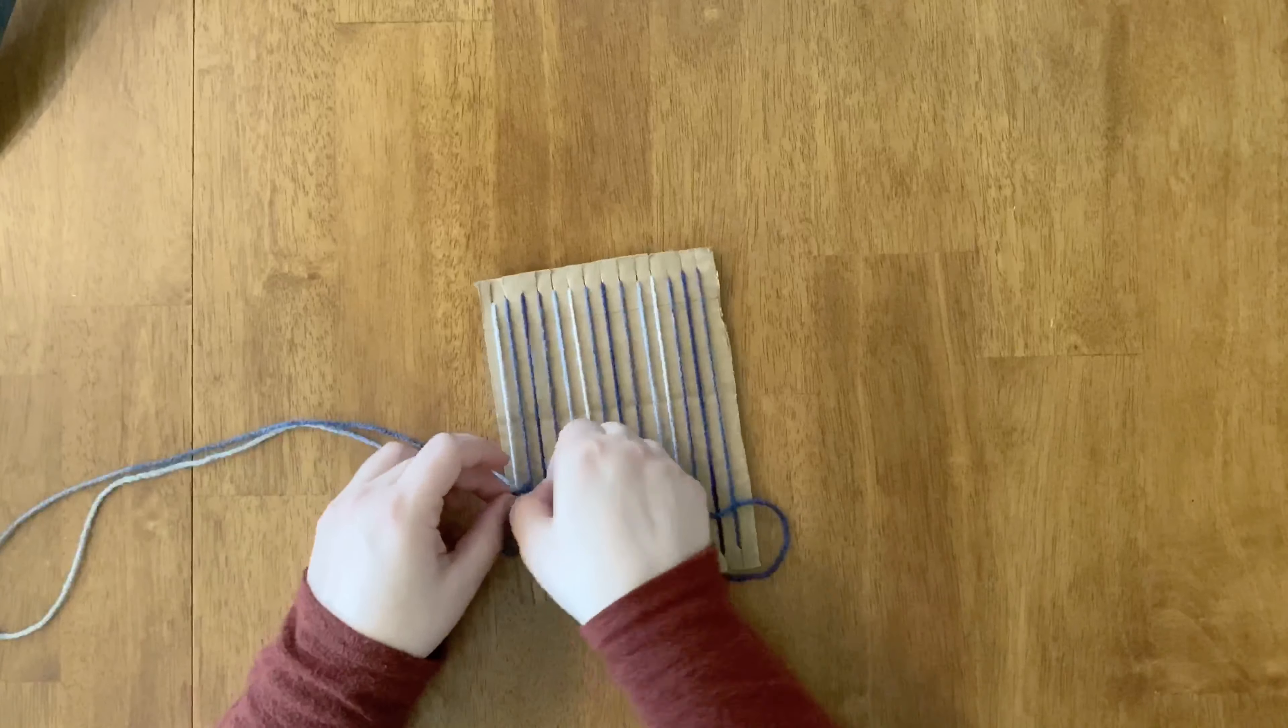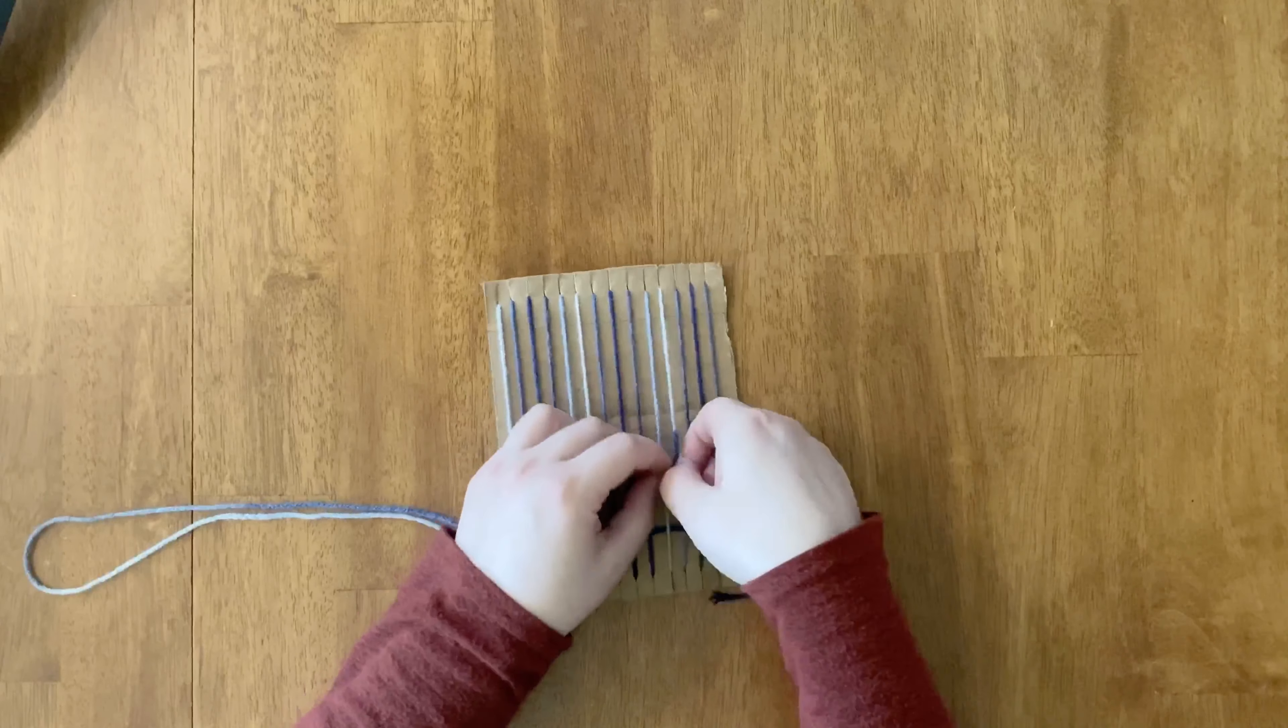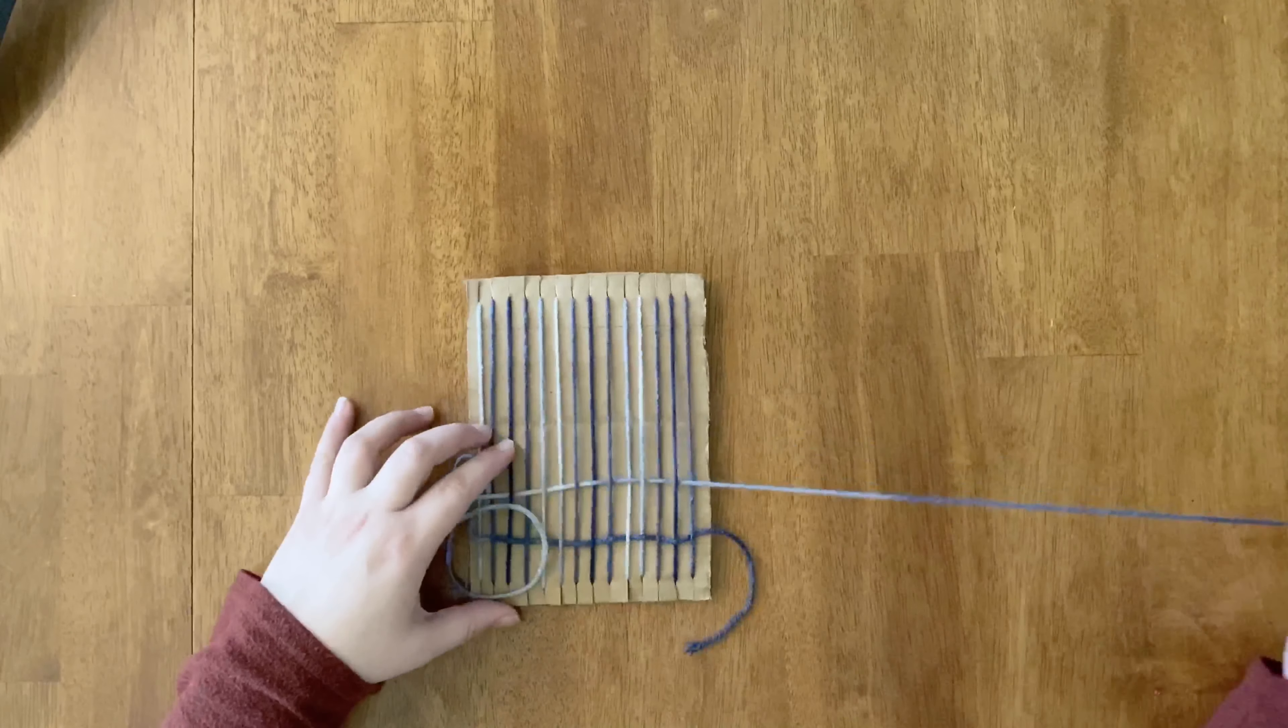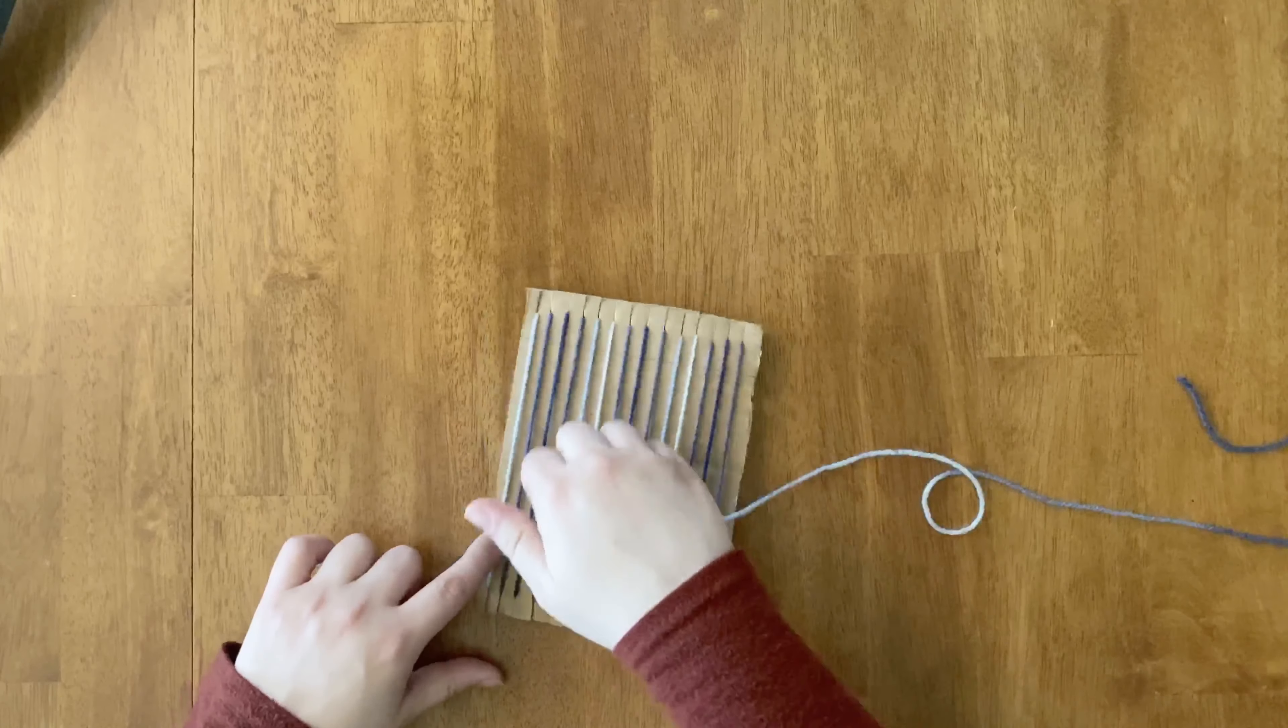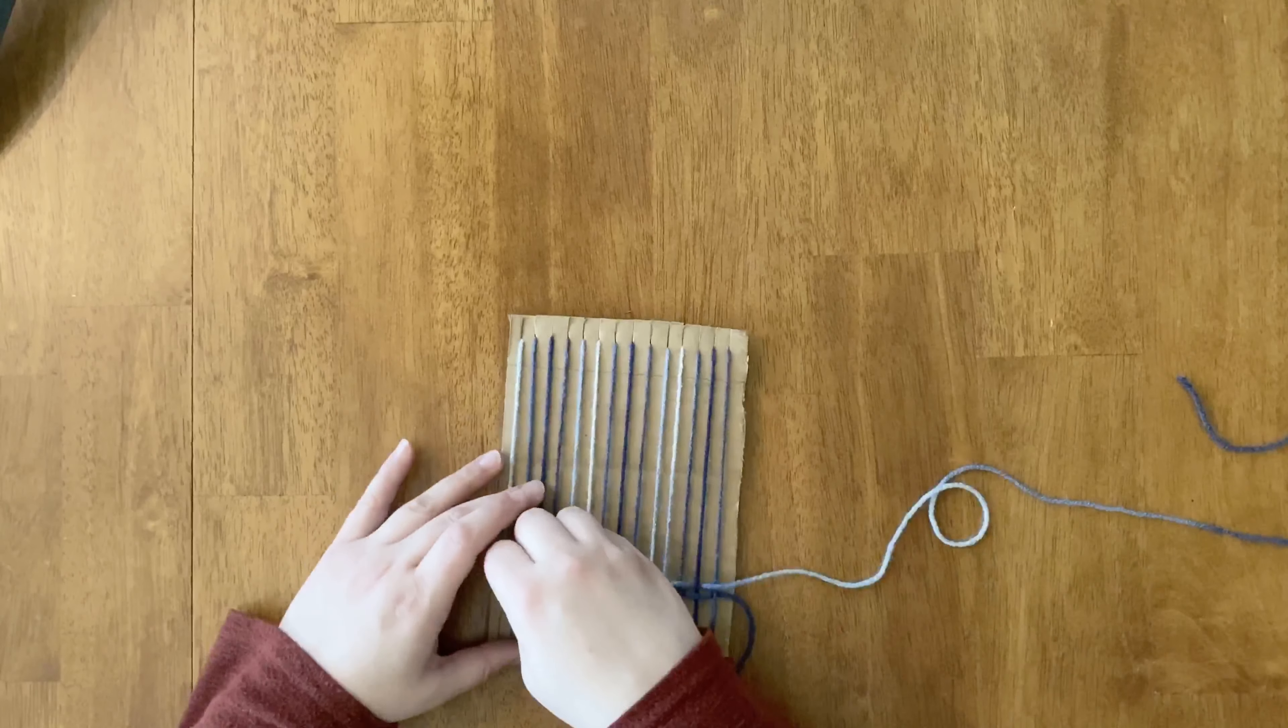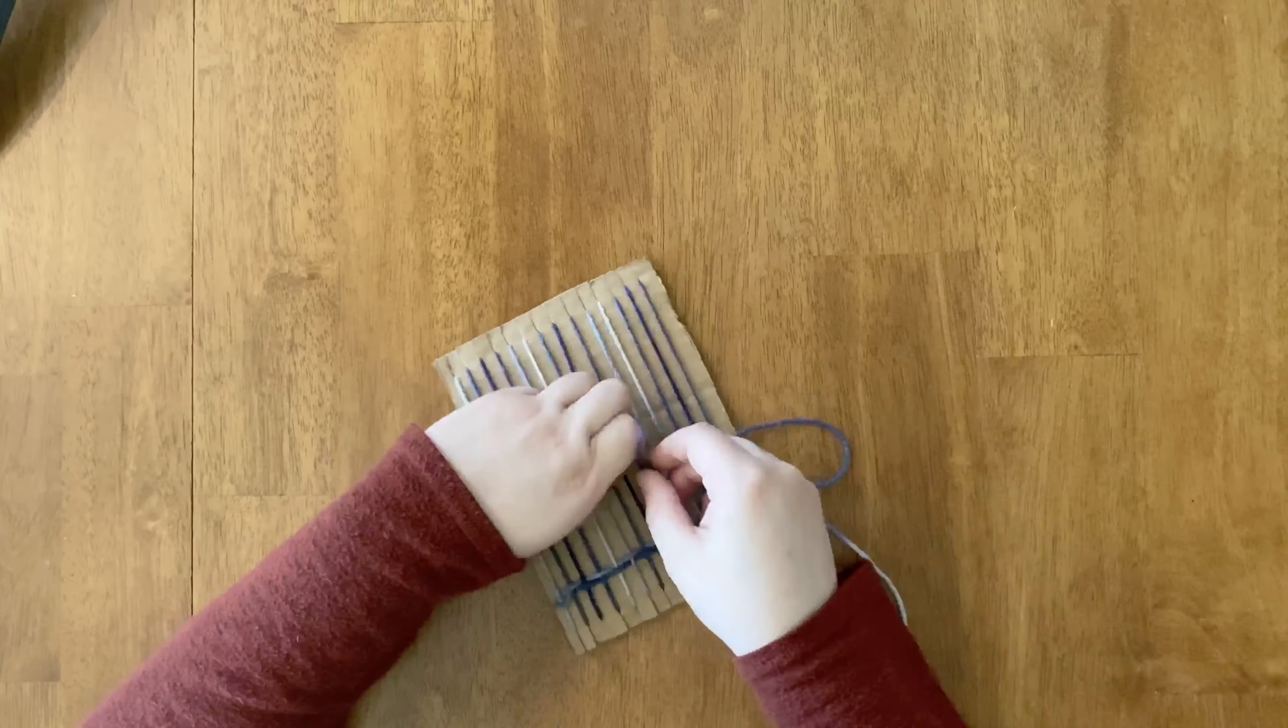And then we'll continue on with our pattern, so over, under. And when you pull on your weft string here you'll have to pull gently. I like to hold the end of the weft string so I don't pull too hard and cause the warp strings to buckle in. It's important that you keep a nice even tension on your strings. Then I'll continue the pattern going back around the other side.